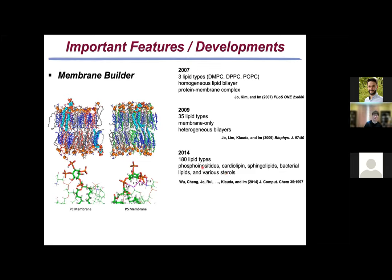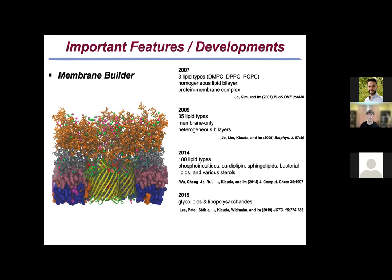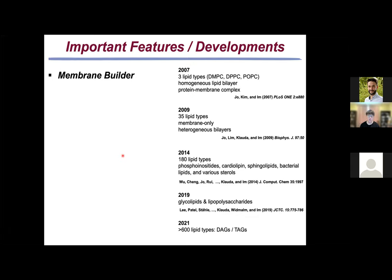It took us quite some time to expand membrane builder to include biologically important lipid types, such as phosphoinositols, cardiolipin, sphingolipid, and various sterols. At this stage, we thought that one could build quite realistic biological membranes. What was lacking at that time was glycolipids, glyco-detergent, glycolipid, GPI anchor — that some proteins anchor to — and also lipopolysaccharide from various gram-negative bacteria. Now, in 2021, we have over 600 different lipid types.